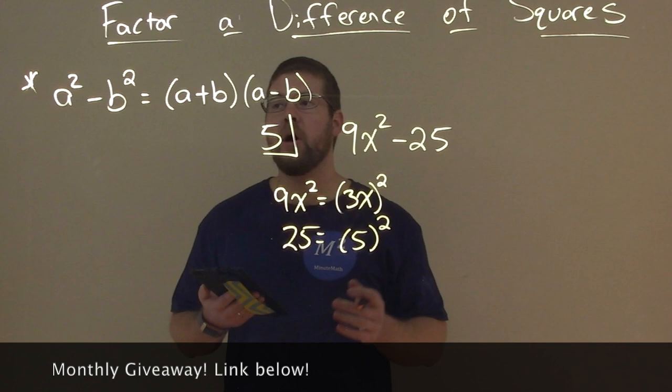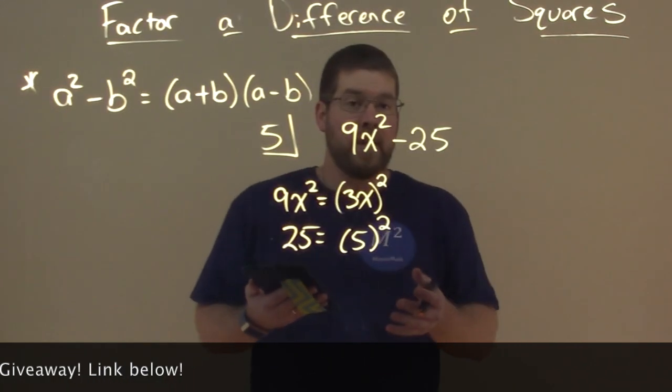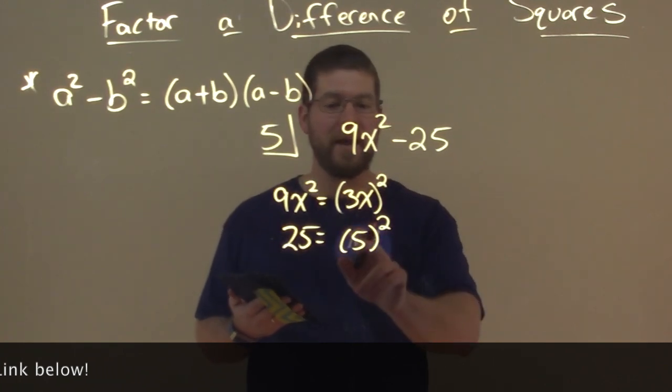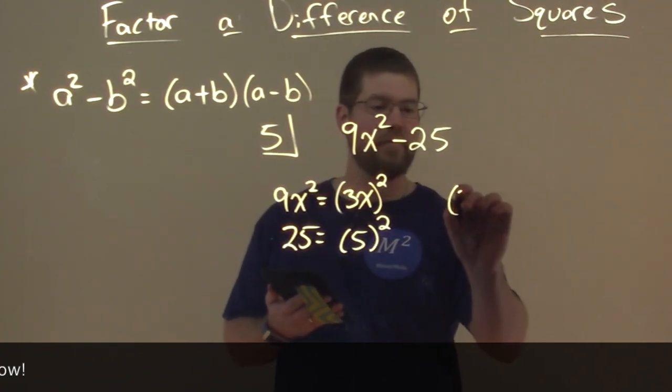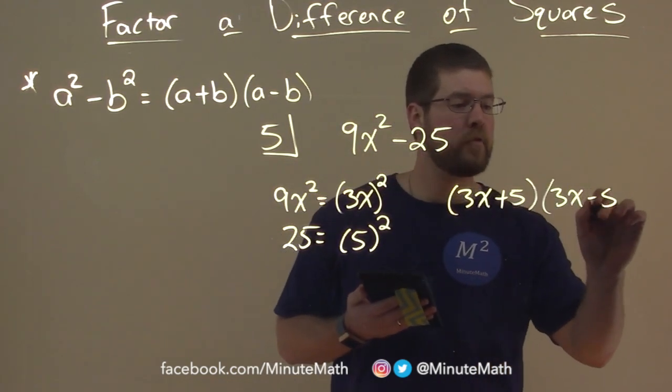So our a and b terms are perfect squares. So now our rule just applies. Now we can just factor this out. We have our a and b term. So we have 3x plus 5 times 3x minus 5.